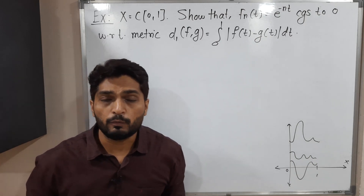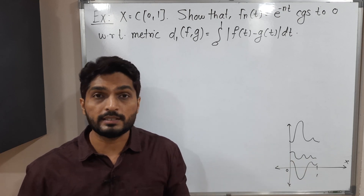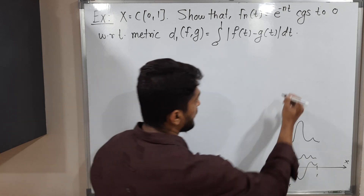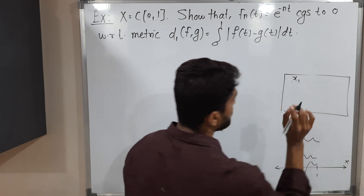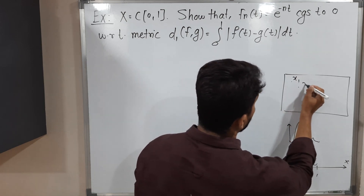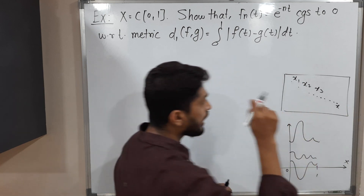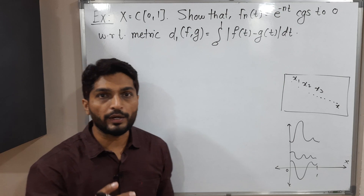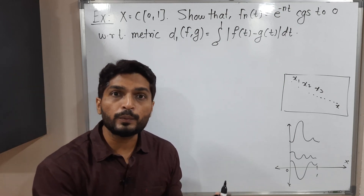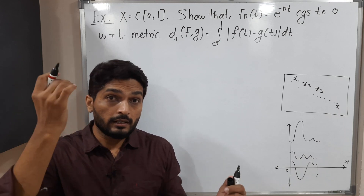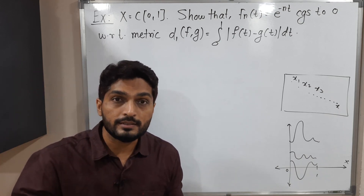First of all, when we say a sequence xn converges to x, let us draw the diagram and try to understand the meaning of it. This is the first point of a sequence, the first term, second term, third term. If all terms of a sequence are moving towards a single point, then we say the sequence converges to x. Points are moving towards x.